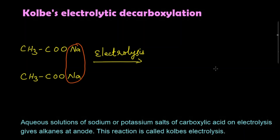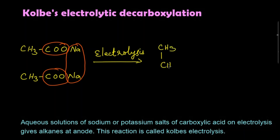What happens is very simple: the two Na atoms get eliminated as sodium at the anode, and one CO₂ and another CO₂ are eliminated as two molecules of carbon dioxide. The two methyl groups (CH₃) get attached to form ethane.